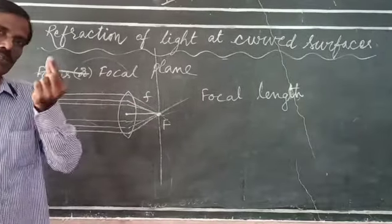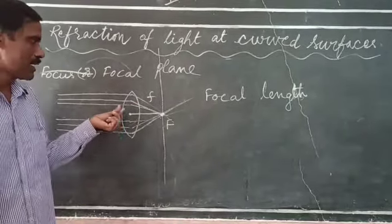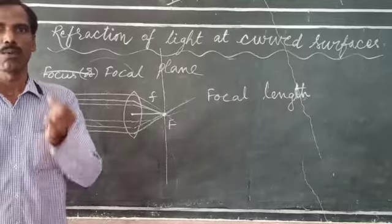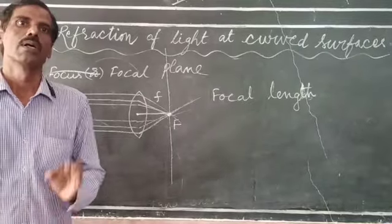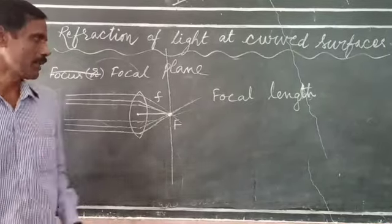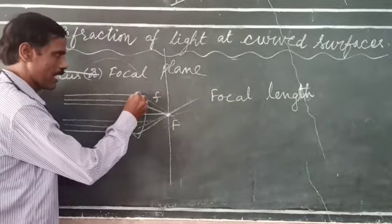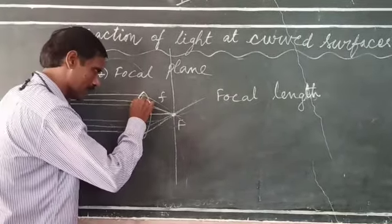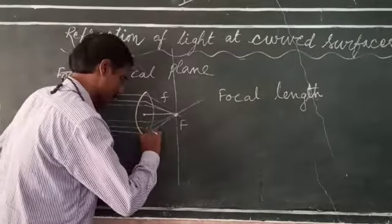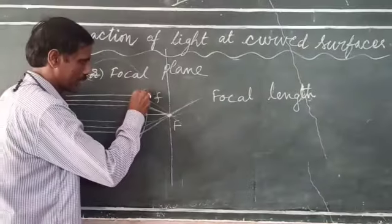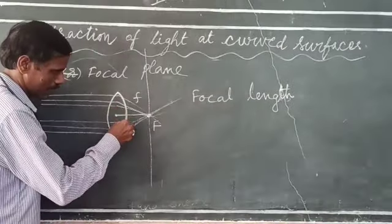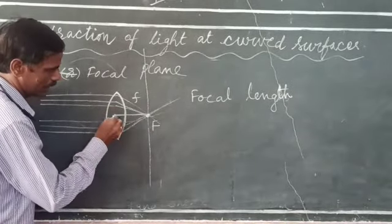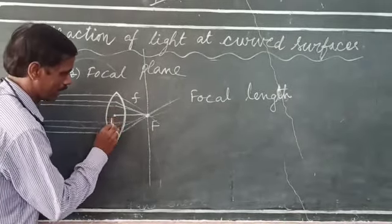We also use a new term — pole. What is pole? Pole is defined as the geometric center of the lens. The geometric center, or center of the lens, is represented by the pole.